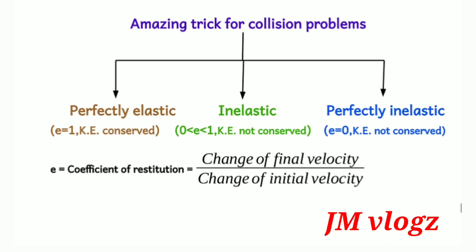We know that in the case of collision there are three types. One is perfectly elastic collision, in which kinetic energy and momentum both are conserved — in that case the coefficient of restitution is taken as one. The second type is inelastic collision, in which kinetic energy is not conserved, only momentum is conserved, and the value of coefficient of restitution is between 0 and 1.